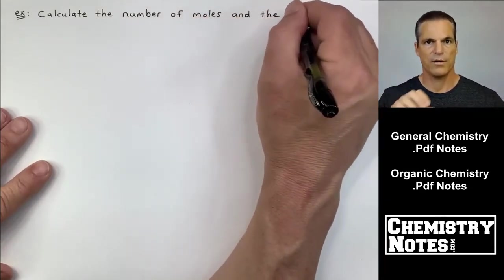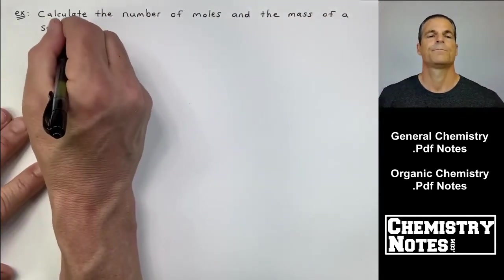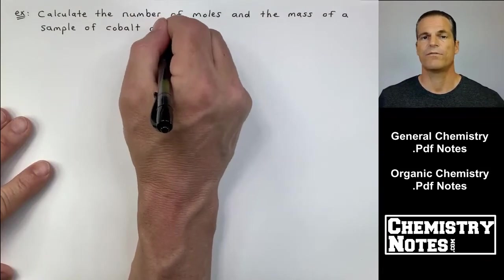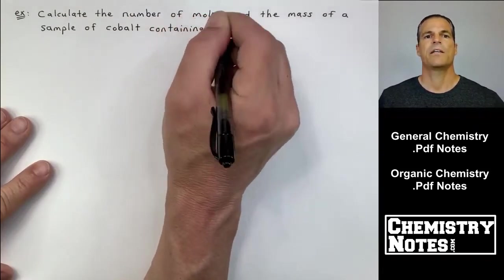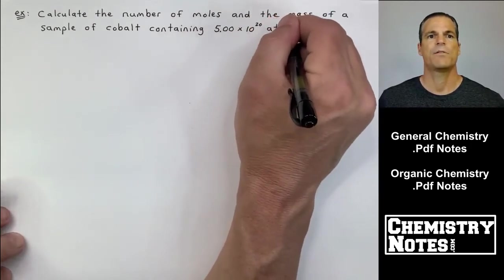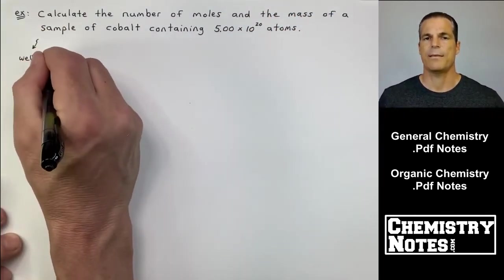Last example of this first video from section 3. Calculate the number of moles and the mass of a sample of cobalt containing 5.00 times 10 to the 20th atoms.